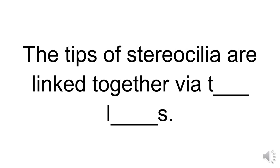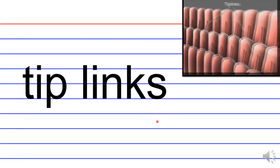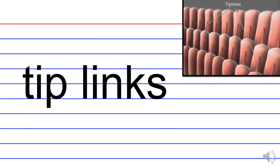The tips of stereocilia are linked together via T blank L blank S. So anatomically speaking, what links the stereocilia in the inner ear? That would be tip links as seen here. So these individual rod-like structures are the stereocilia linked by tip links.